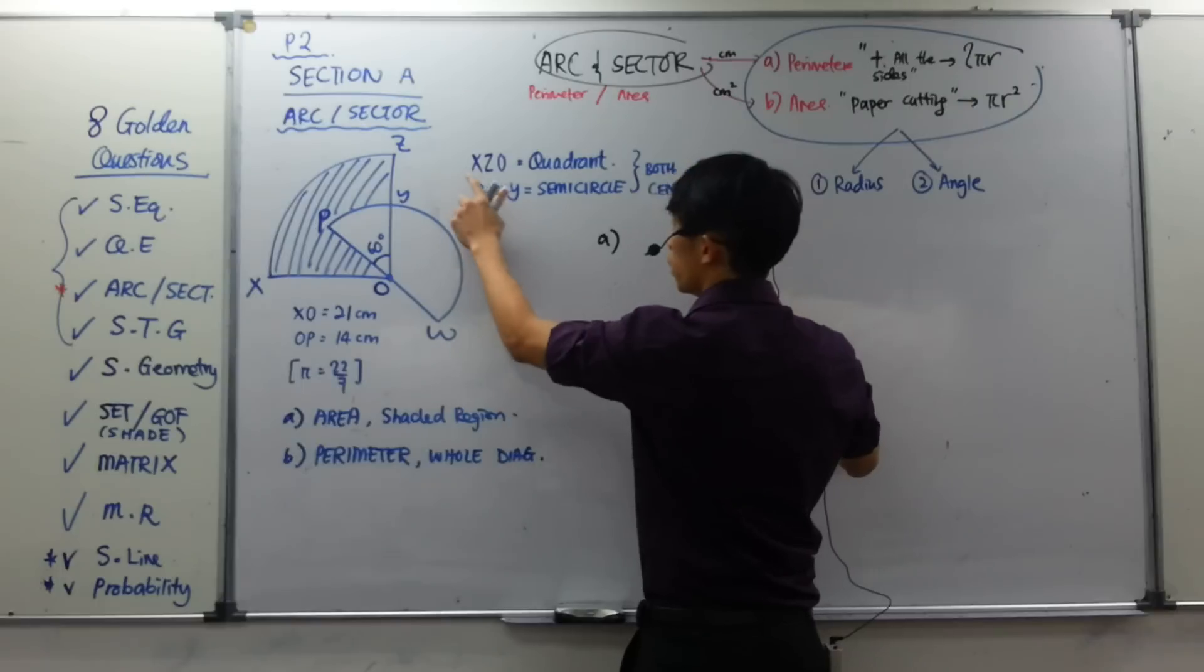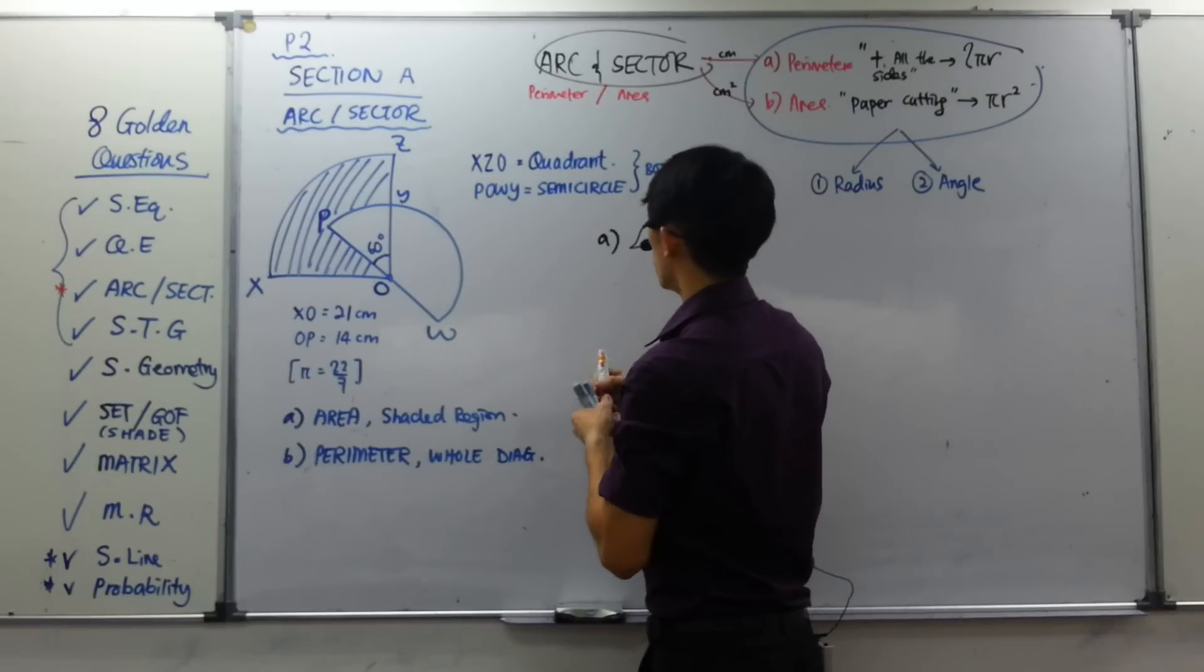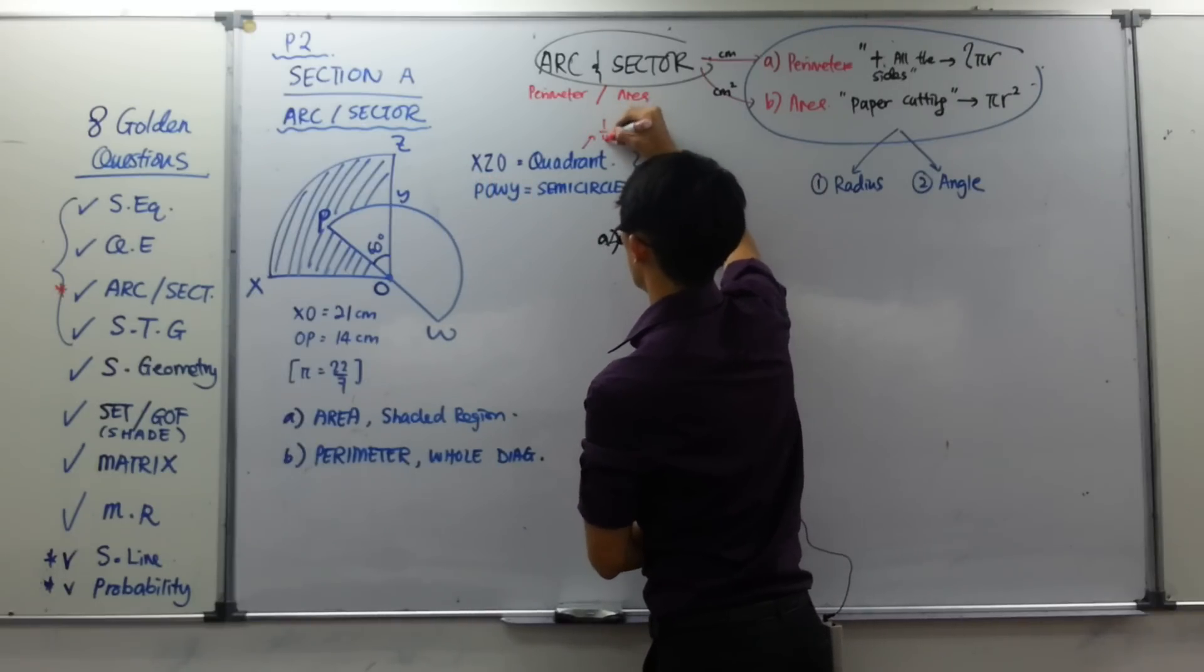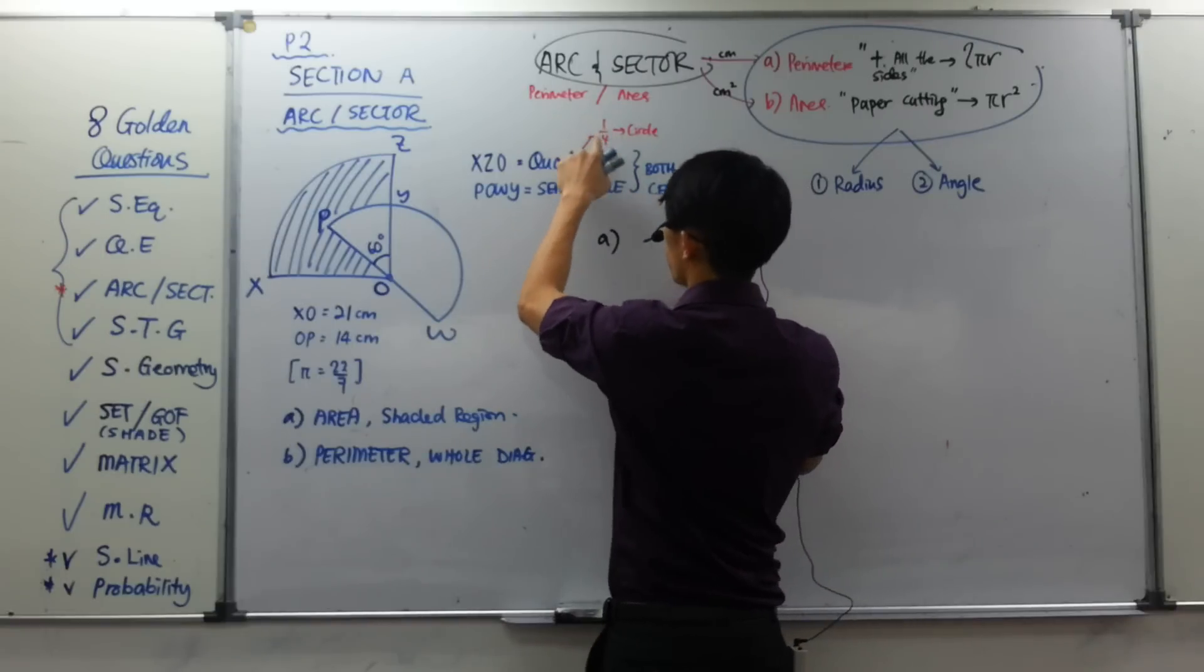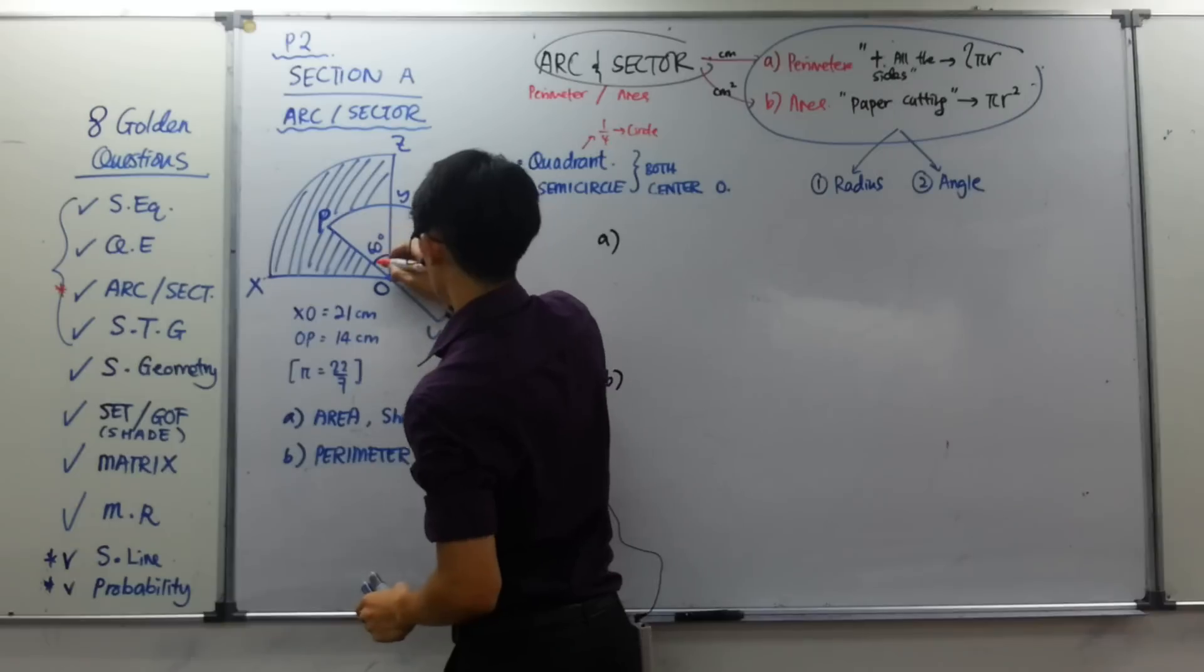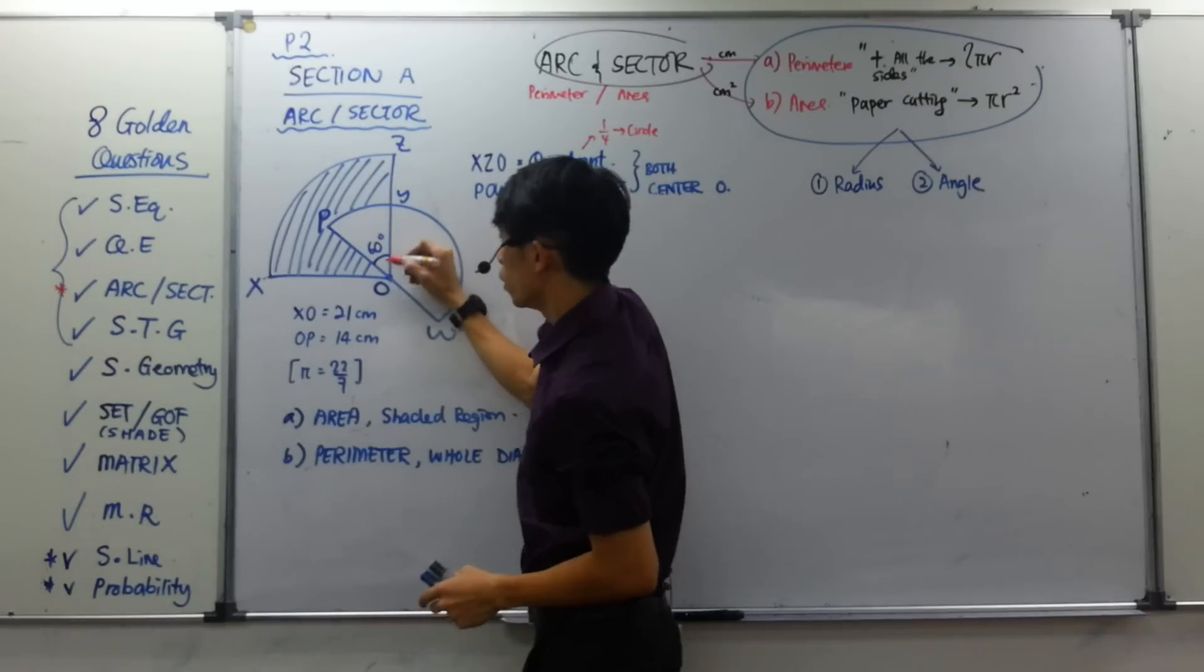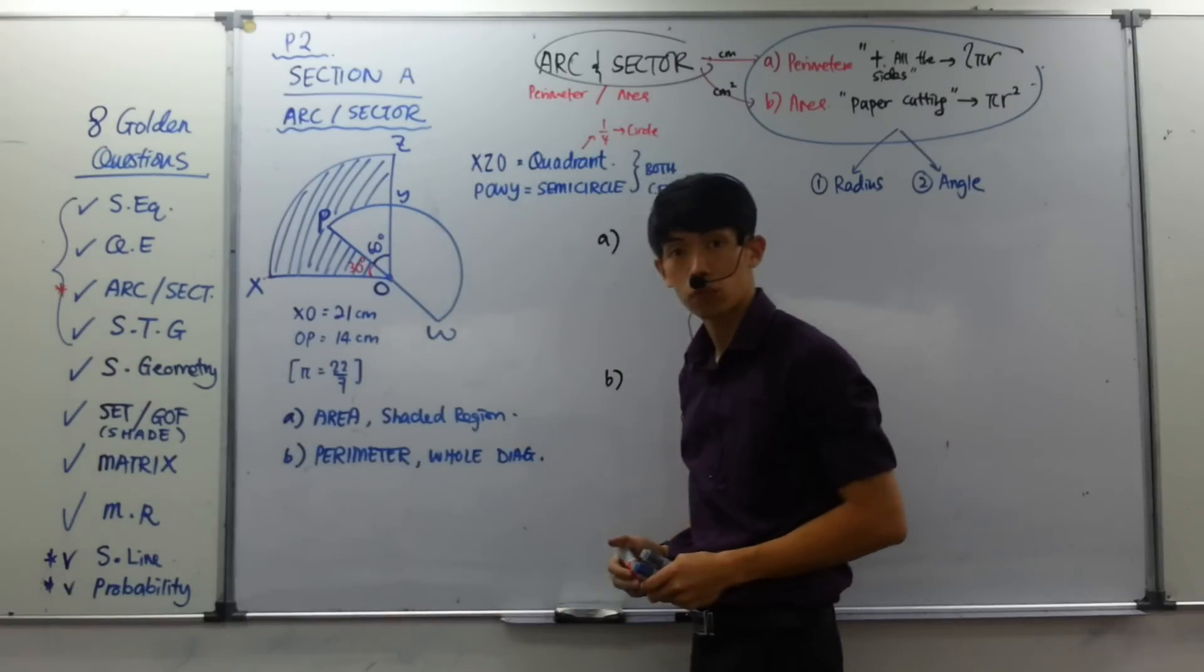What do I mean by fill in the blanks? Just take out all your formulas, throw everything inside, you get an answer. And what do I mean by throw? Throw this two information into the fill in the blanks columns. So now, let's come to part A. I read out the whole diagram. They mention XZO is a quadrant. When you see the word quadrant, it means one over four of a circle. Just a detailed understanding for you.